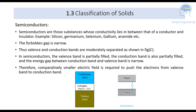The energy gap for semiconductors is very narrow. Compared with insulators and conductors, the forbidden energy gap for a semiconductor is about 1 electron volt, whereas for insulators it is in the range of 6 electron volts. The valence band is partially filled and the conduction band is also partially filled, and the energy gap between them is very narrow. Consequently, a comparatively smaller electric field is required to push electrons from the valence band to the conduction band. So the classification of solids includes conductors, insulators, and semiconductors, categorized based on their energy bands.